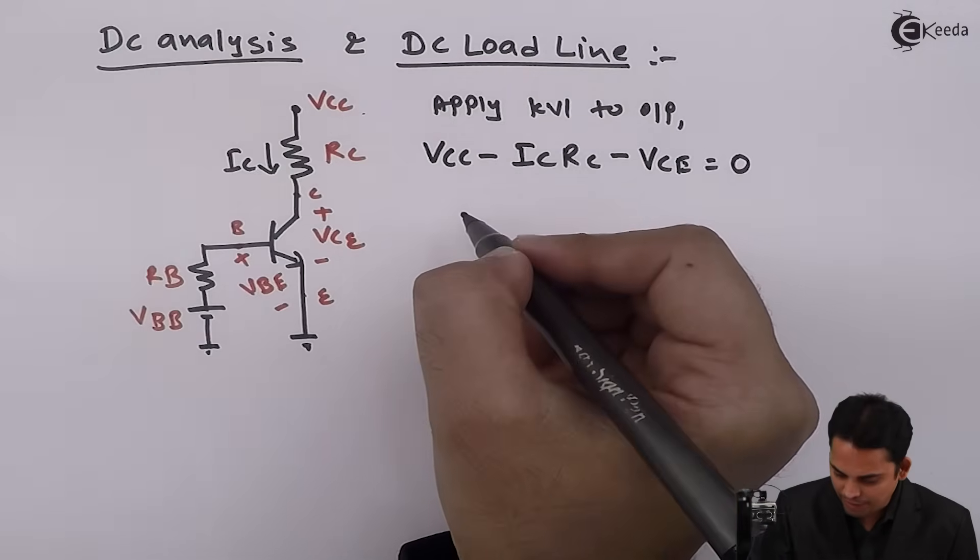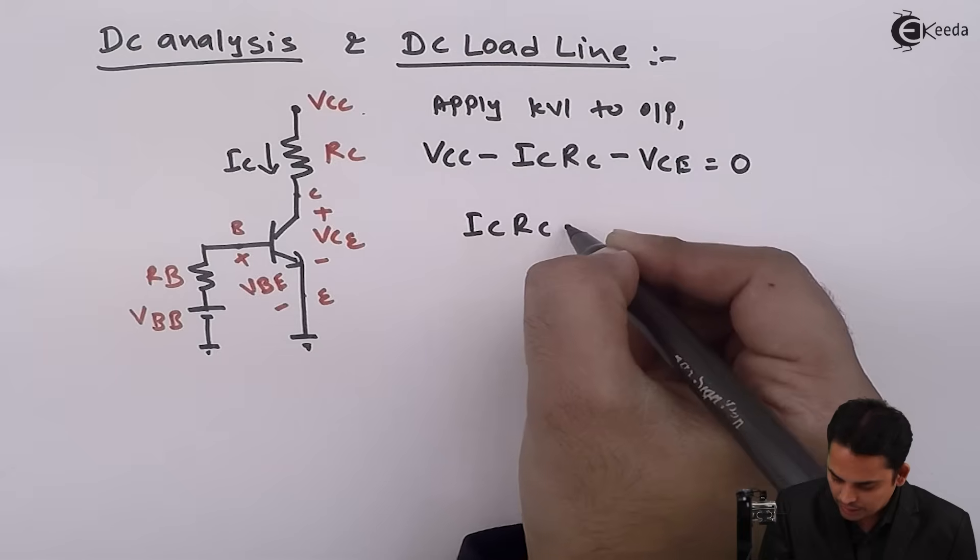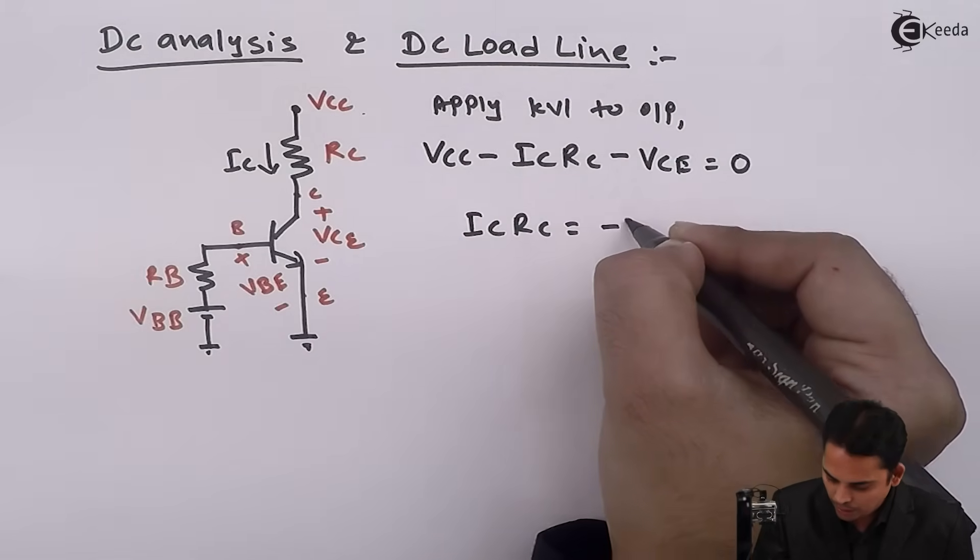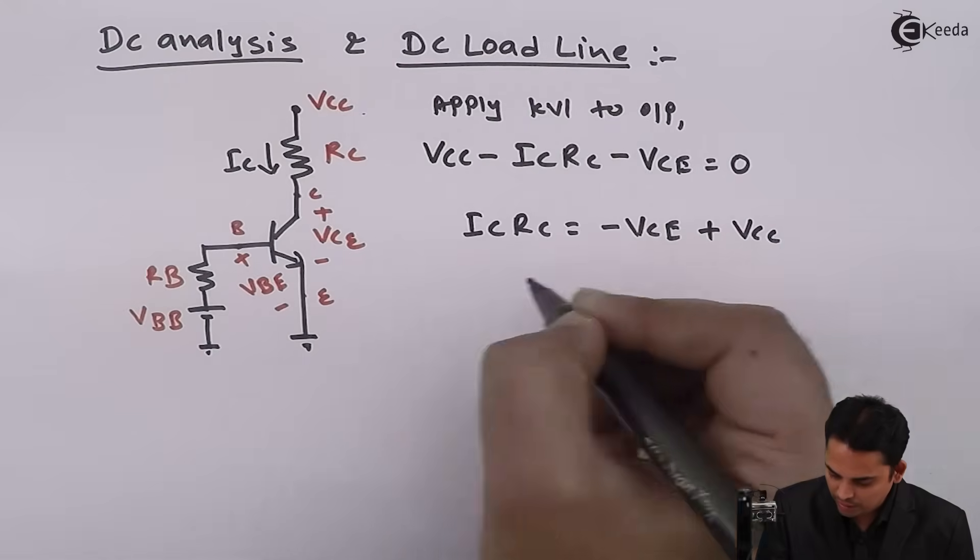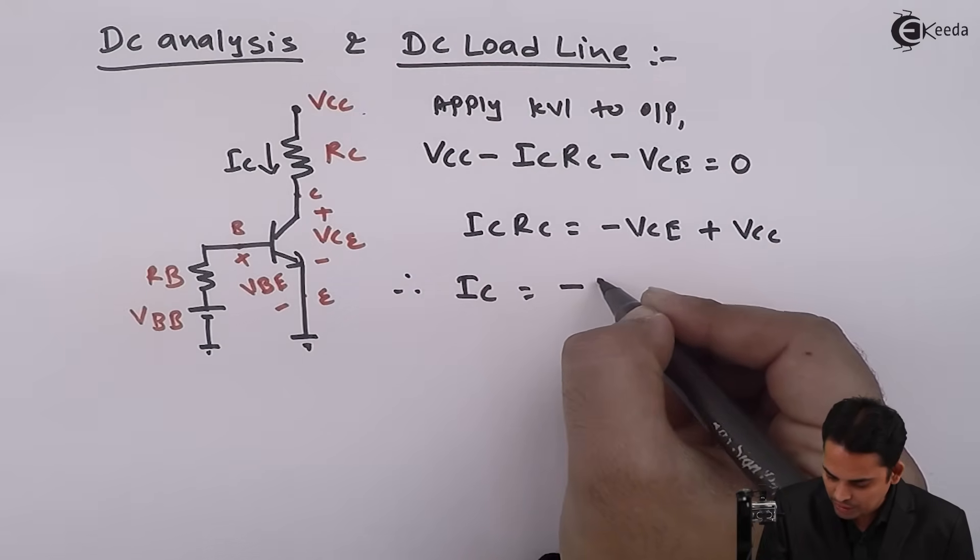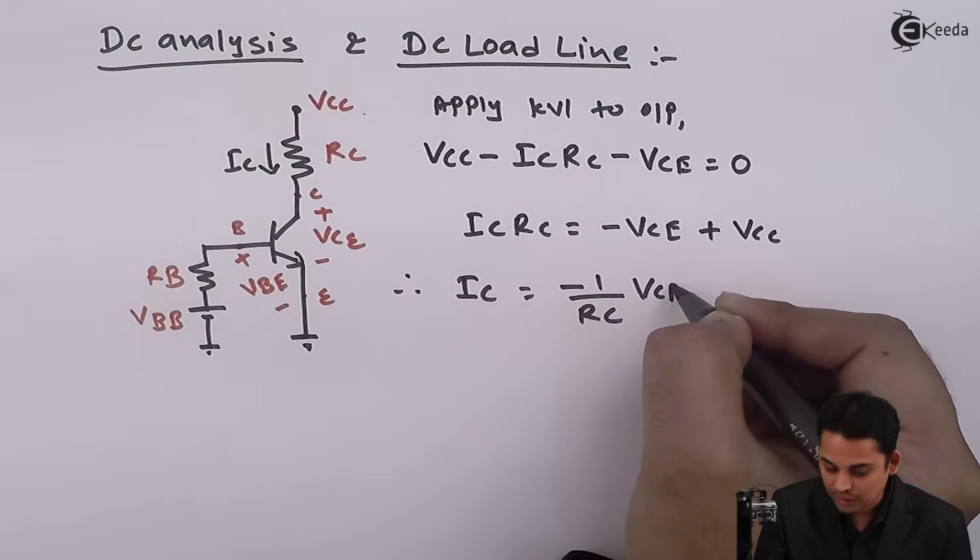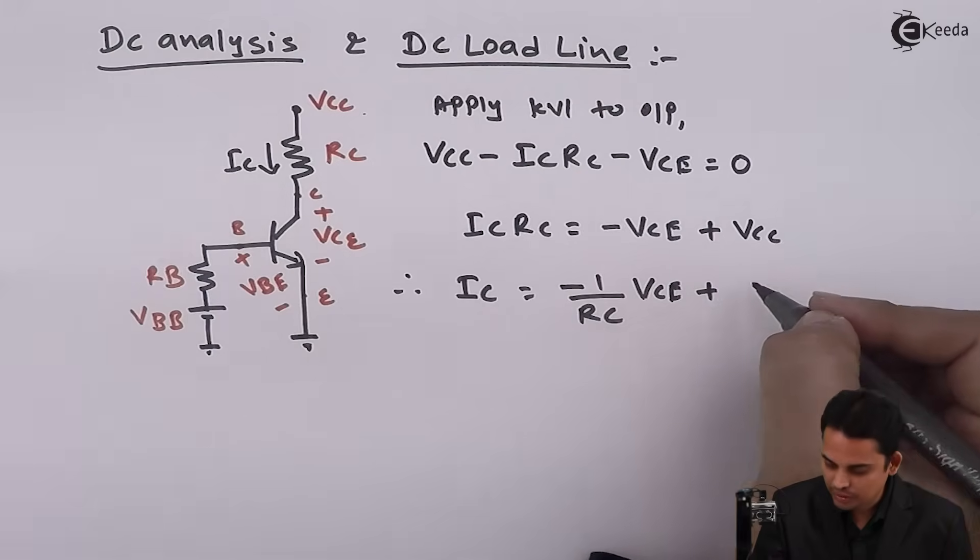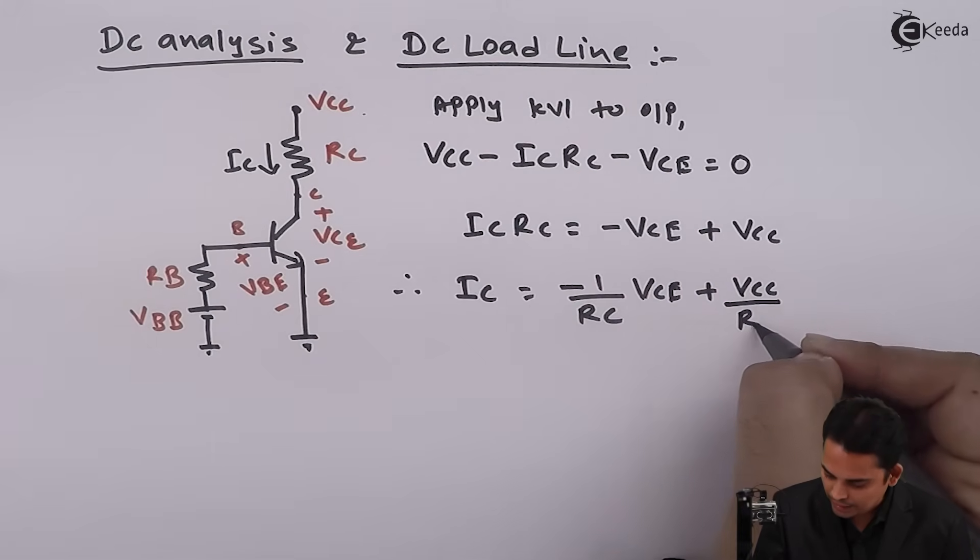Hence, we can write IC into RC is equal to minus VCE plus VCC. Hence, IC is equal to minus 1 by RC into VCE plus VCC divided by RC.